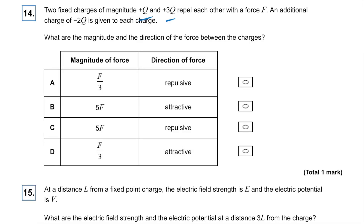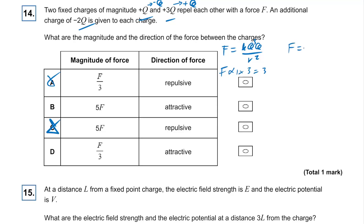Question fourteen: two fixed charges Q and 3Q; minus 2Q is given to each. So Q becomes minus Q and 3Q becomes plus Q. They are now opposite charges, so they're attractive — can't be C or A. For the magnitude: originally the product is 1×3 equals 3; afterwards it's 1×1 equals 1. So the force goes to a third of its original value. The answer is D.